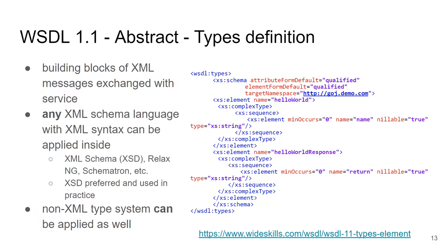WSDL is quite universal and allows you to use other XML schema languages in the Types element, such as RELAX NG or Schematron. Non-XML type systems can also be used. However, typically only XML schema is supported in implementations of the web services stack. WSDL allows broader options, but specific implementations limit themselves to XML schema. So in the Types part you define all the elements and complex types that you will need in the messages.